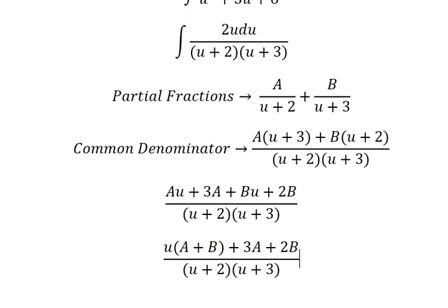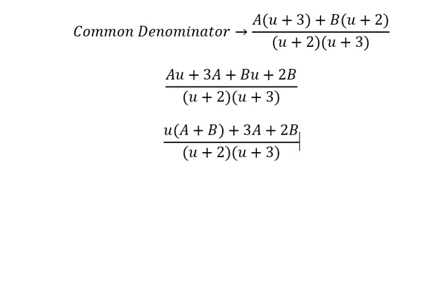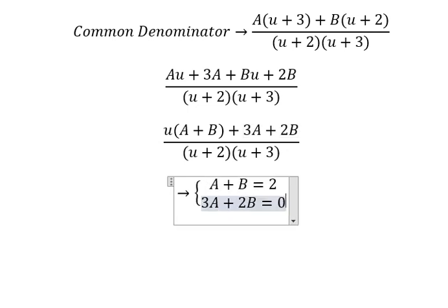Next we compare the coefficient. We just have only u. That means A plus B equals to number 2 in here. Because we don't have known term of u, so that means 3A plus 2B equals to number 0.